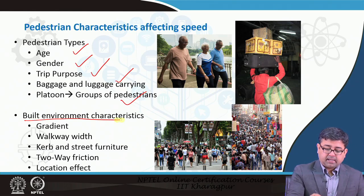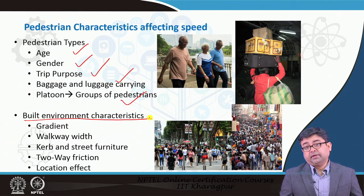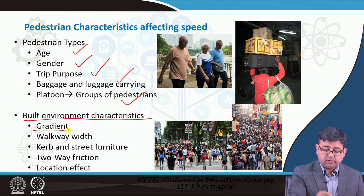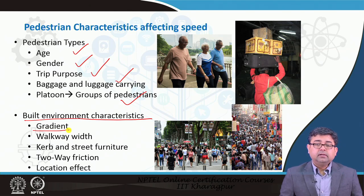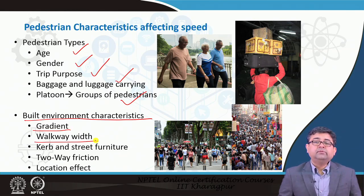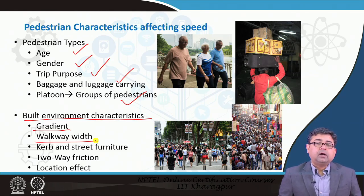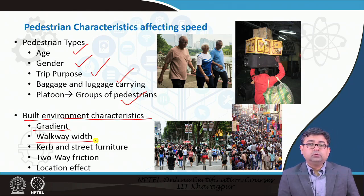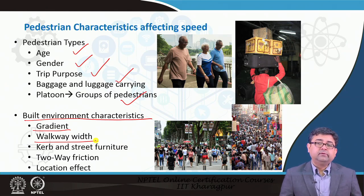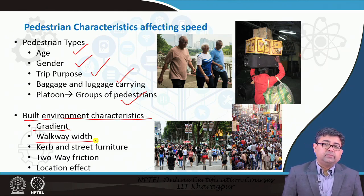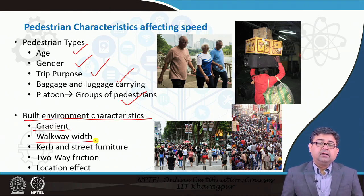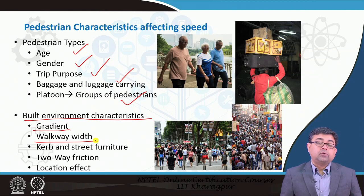Looking at built environment characteristics, where you are walking also affects your speed. If you are walking on a road with a high gradient — if the road is very up and down — your speed will vary. Walkway width is another factor: on a very narrow sidewalk you are conscious of being close to fast-moving vehicles, so you tend to walk carefully away from the carriageway, which reduces your speed, especially when there are many people on that narrow footpath.